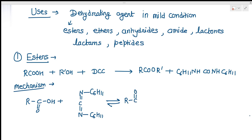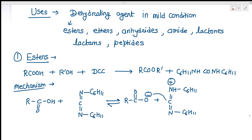DCC abstracts the proton from the acid, forming a positively charged intermediate: NH-C6H11 with a C=N=C6H11 unit bearing a positive charge. This nucleophile then attacks the carbonyl carbon of the acid.